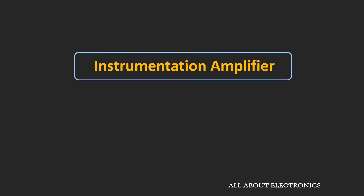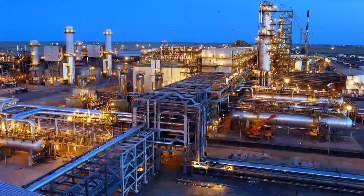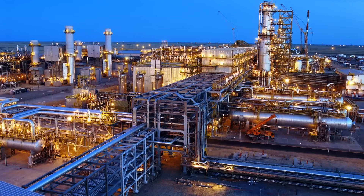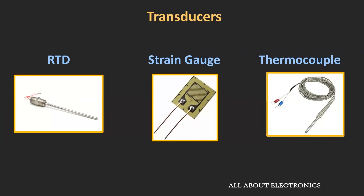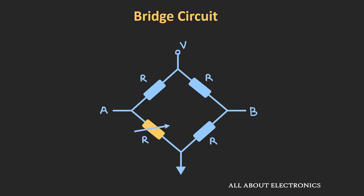First, let us see some problems that we can face if we use a normal differential amplifier in certain industrial applications. In many industrial applications, it is required to measure parameters like temperature, flow, humidity, etc. These parameters are measured using transducers like RTD, strain gauge, and thermocouples. These transducers convert the measured parameter into electrical signals. Many times, bridge circuits are used to convert the measured parameter into electrical signals.